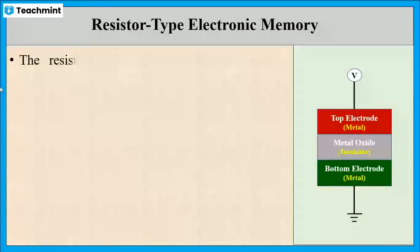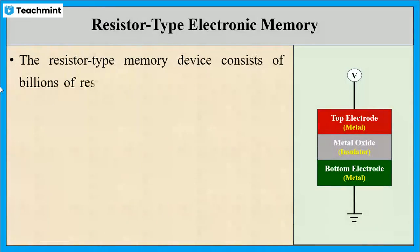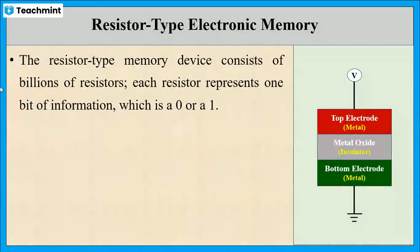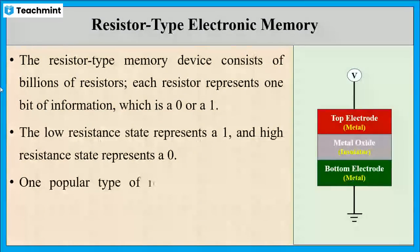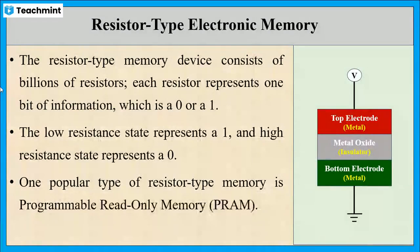In this case also, the memory device consists of millions of resistors and each resistive device represents one binary digit of information. The low resistor state is represented by 1 and the high resistor state is represented by 0. Programmable RAM is the example for this type of memory.